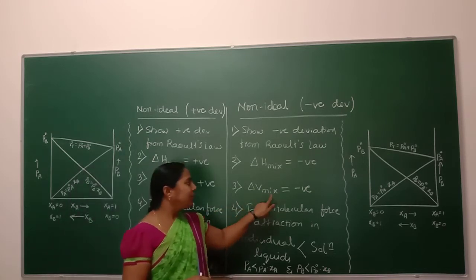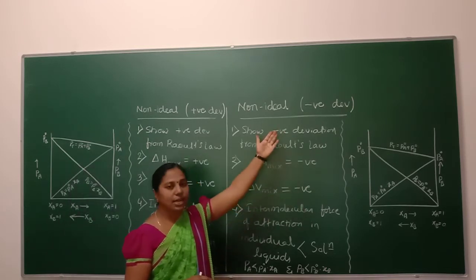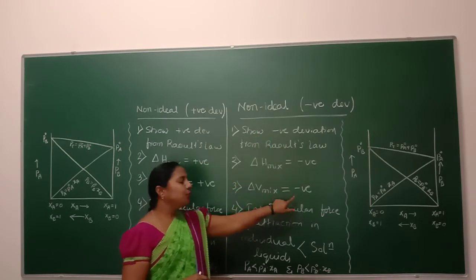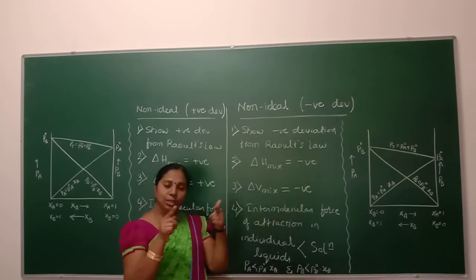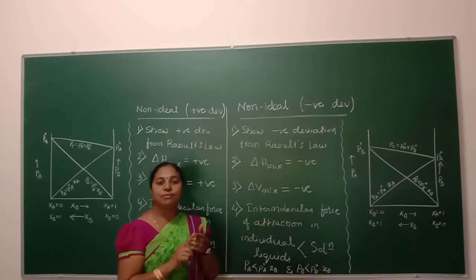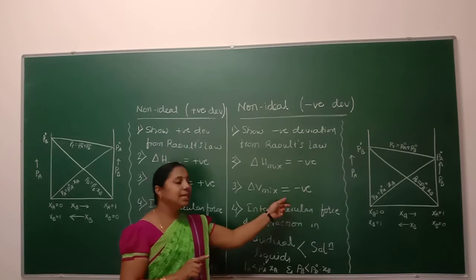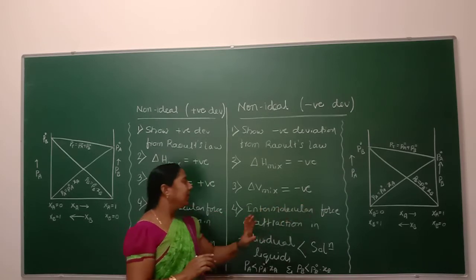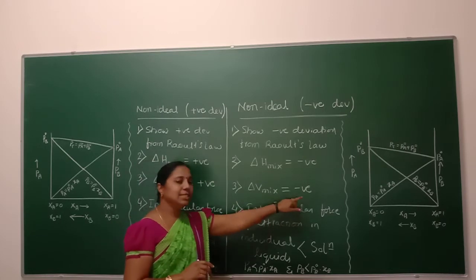Delta V of mixing is negative in case of non-ideal with negative deviation. Why? Because during the mixing of the two liquids, there is a decrease in volume. Hence, delta V of mixing is negative.